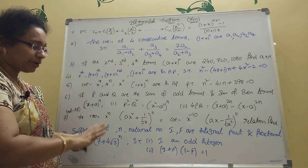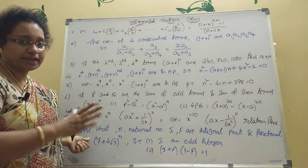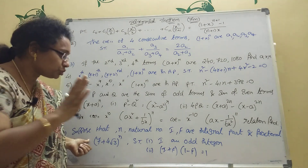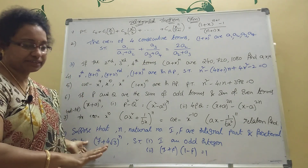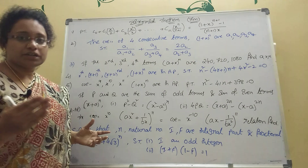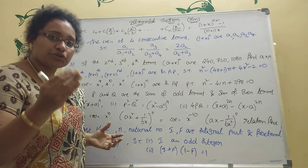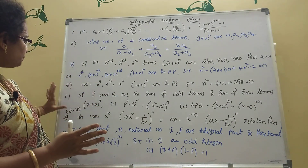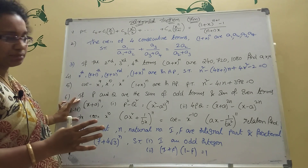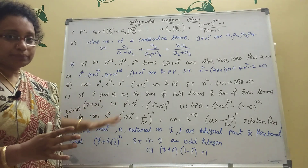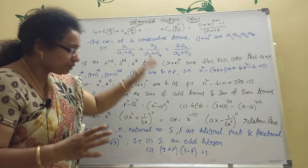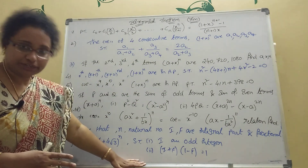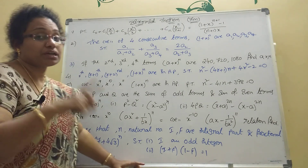The eighth problem is not the most important, but I have written it here since the model exists. If you want 75 out of 75, you must practice all eight sums. But if you just want to pass, practicing up to six or seven sums is enough. For full marks, practice all eight.